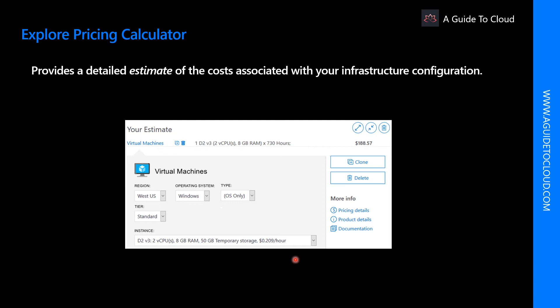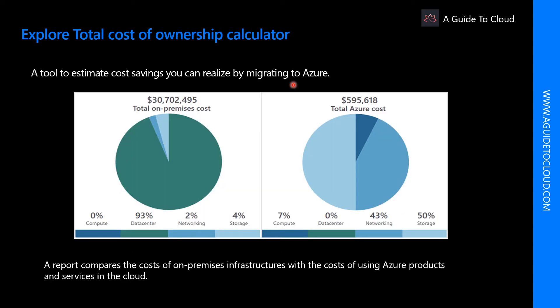The options you can configure in the Pricing Calculator vary between products, but basic configuration options include region, tier, billing options, support options, and program offers. The Total Cost of Ownership Calculator is a tool that helps you estimate the cost savings you can realize by migrating to Azure.